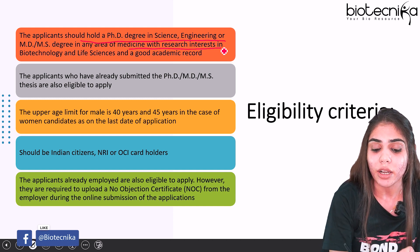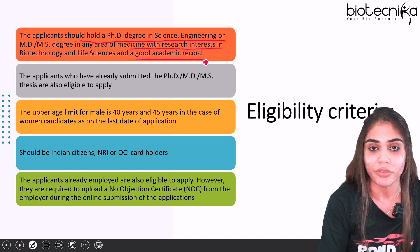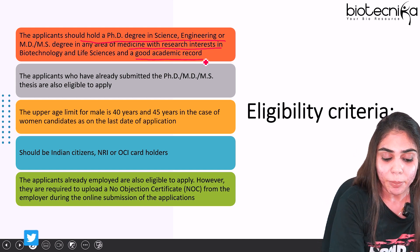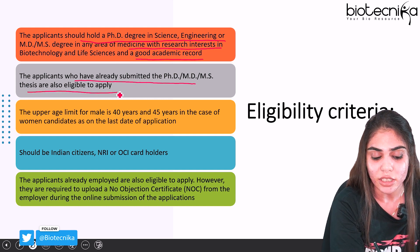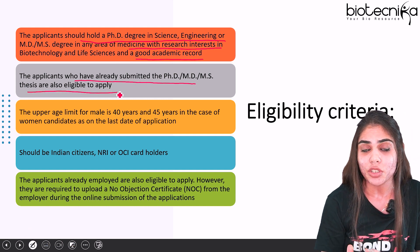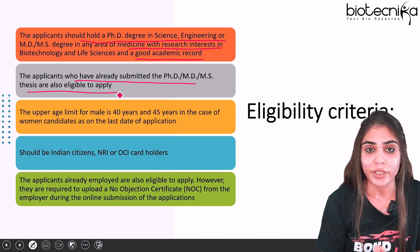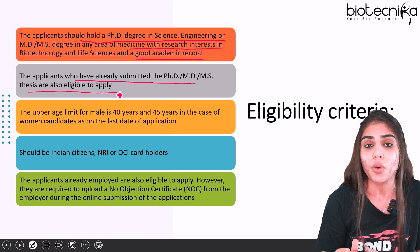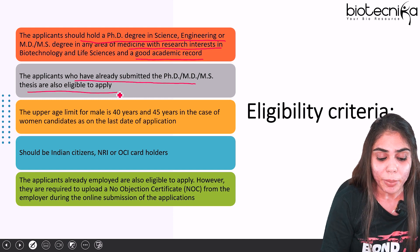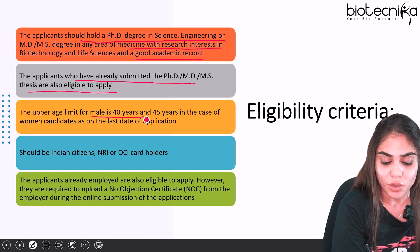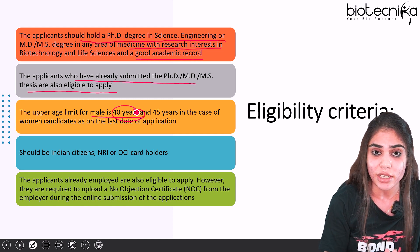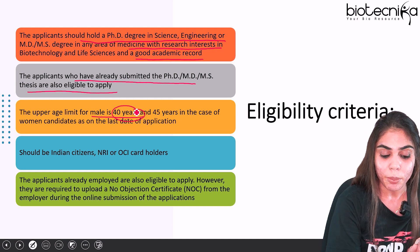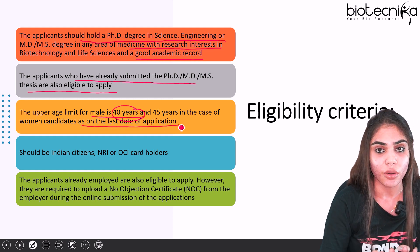Make sure you should have a good academic record to apply for this fellowship. Applicants who have already submitted their PhD thesis are also eligible to apply — even if you have submitted but not yet been awarded your degree, you can still apply. The upper age limit for male candidates is 40 years, while women candidates get 5 years of relaxation, making their upper age limit 45 years, as on the last date of application.